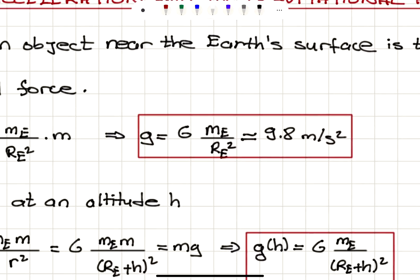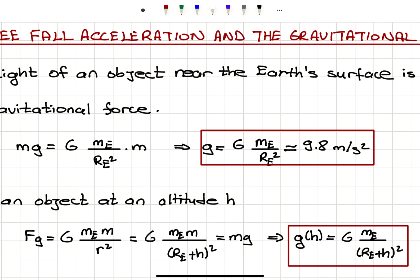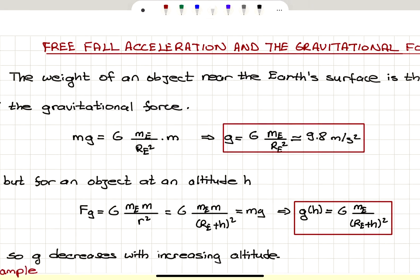From this we can solve for g by cancelling the m's. The gravitational free fall acceleration g equals capital G, the universal gravitational constant, times the mass of the Earth divided by the radius of the Earth squared, which is approximately 9.8 meters per second squared.